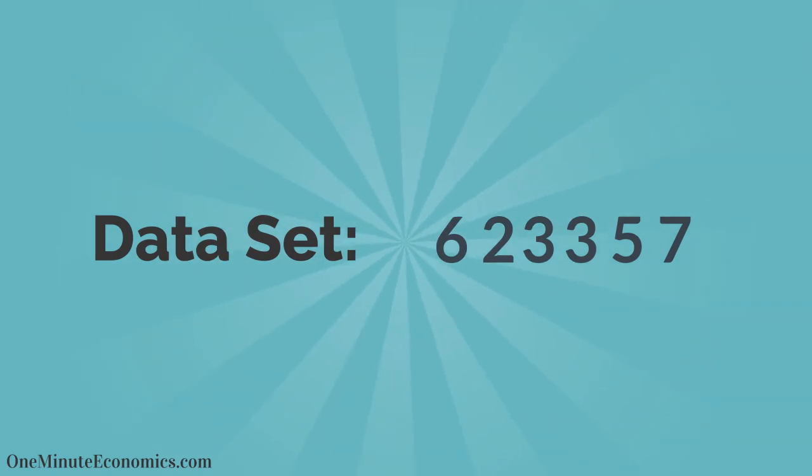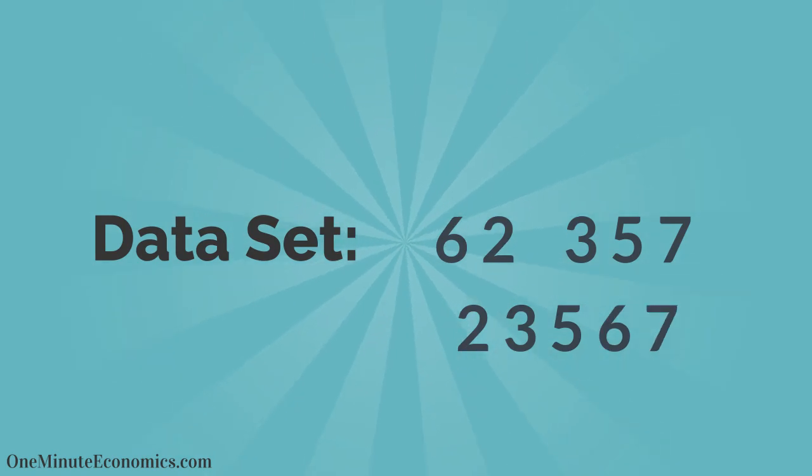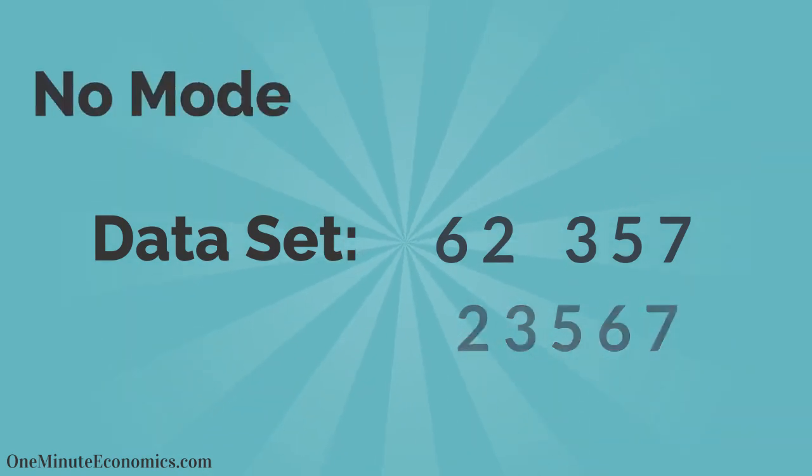But what if we eliminate one of those 3s? In that case, the string becomes 2, 3, 5, 6, 7. In cases like this one, where there are no repeating values, we say there is no mode.